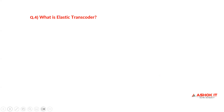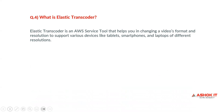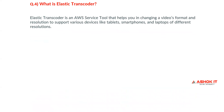What is Elastic Transcoder? Elastic Transcoder is an AWS service tool that helps you change video formats and resolutions to support various devices like tablets, smartphones, and laptops of different resolutions.